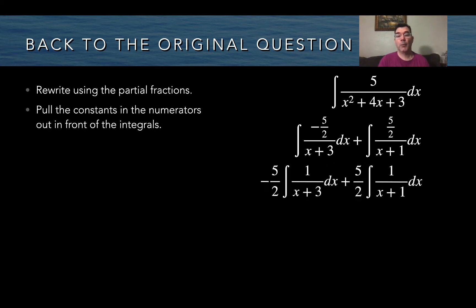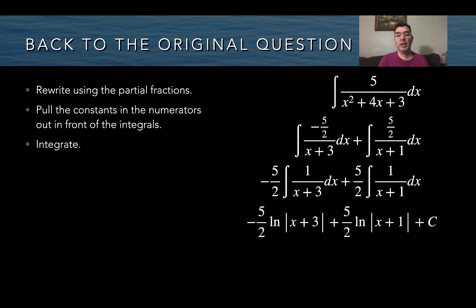Pulling the constant multipliers out front, I have negative 5 halves times the antiderivative of 1 over x plus 3, plus positive 5 halves times the antiderivative of 1 over x plus 1. I know both of those antiderivatives: the antiderivative of 1 over x plus 3 is the natural log of the absolute value of x plus 3, and similarly for x plus 1. I multiply each by the constants, add the plus C at the end, and that is my antiderivative.